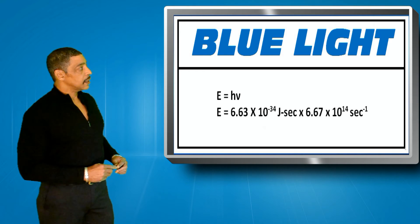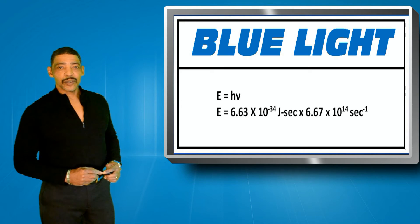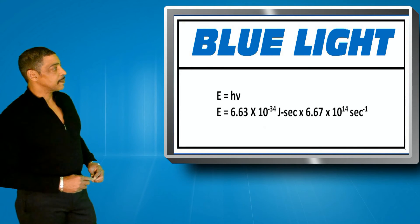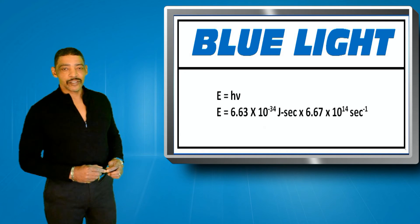And the energy of a photon of blue light will be 4.4 times 10 to the minus 19 joules.